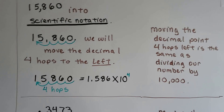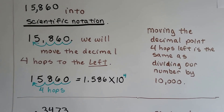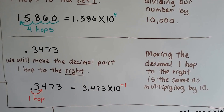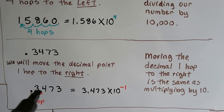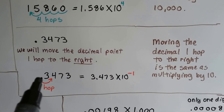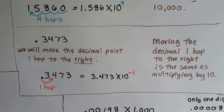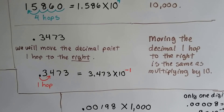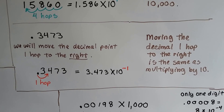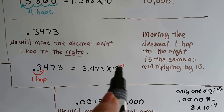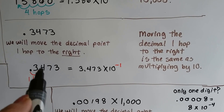Moving the decimal point four hops to the left is the same as dividing our number by 10,000. If we have 0.3473, we can move the decimal point one hop to the right so there'll be one digit in front of the decimal point — like it's supposed to have one digit in front of the decimal point. We'll just move it one space and write it as 3.473 times 10 to the negative 1 because we're bringing it this way. Moving the decimal one hop to the right is the same as multiplying by 10, and once it's in scientific notation we write it as a negative 1 because we went that direction.